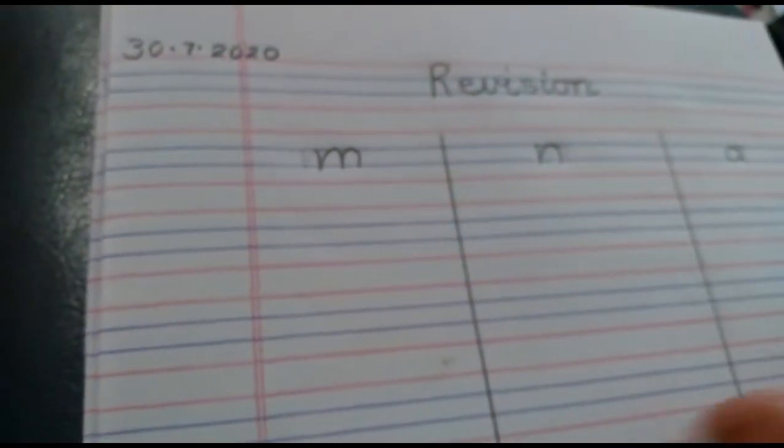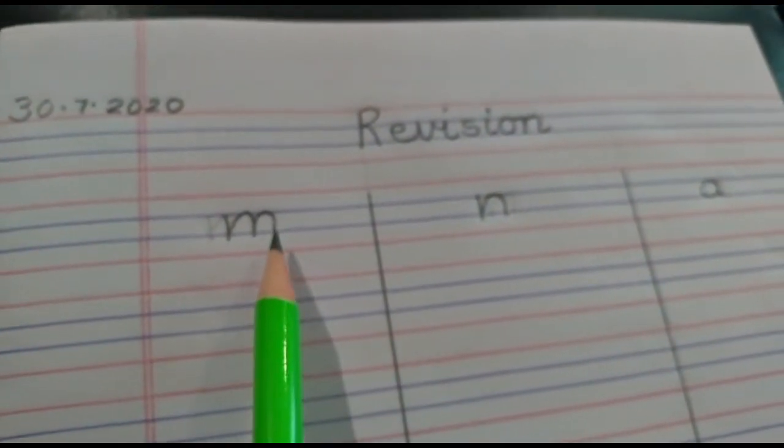I would like you to write letter M, letter N, and letter A and divide the page in three. Thank you parents. Now children, we are going to start writing. So first we are going to write letter M.